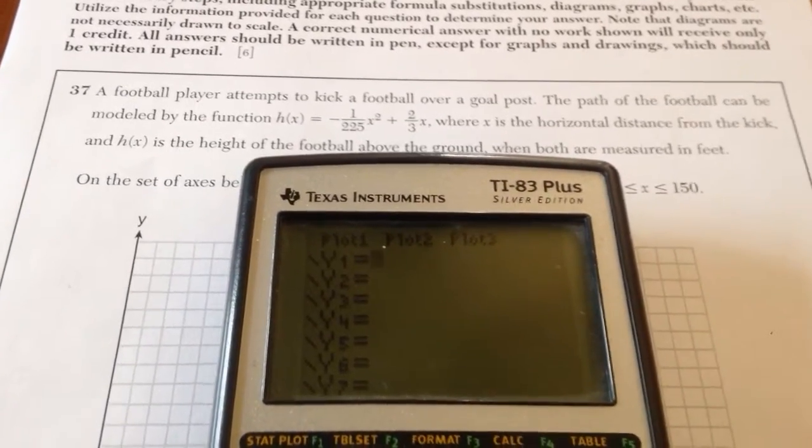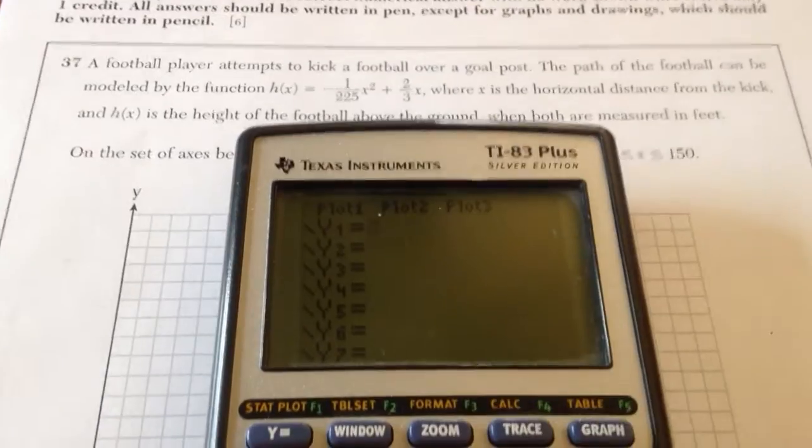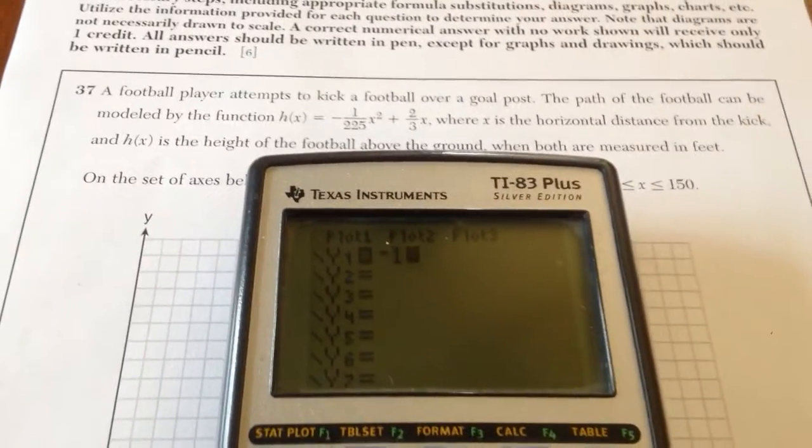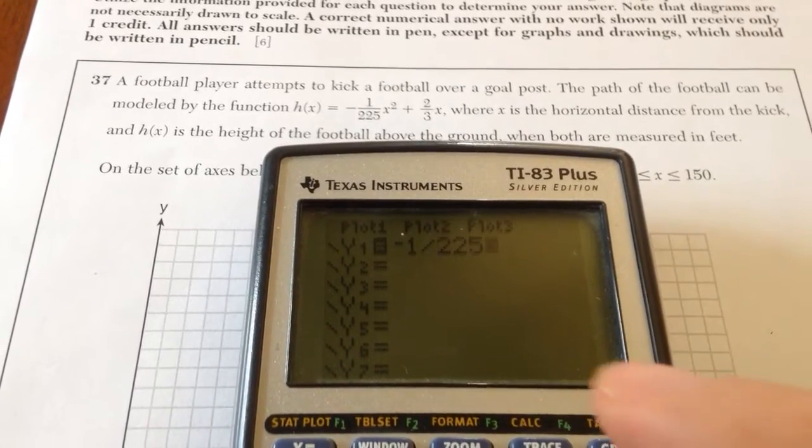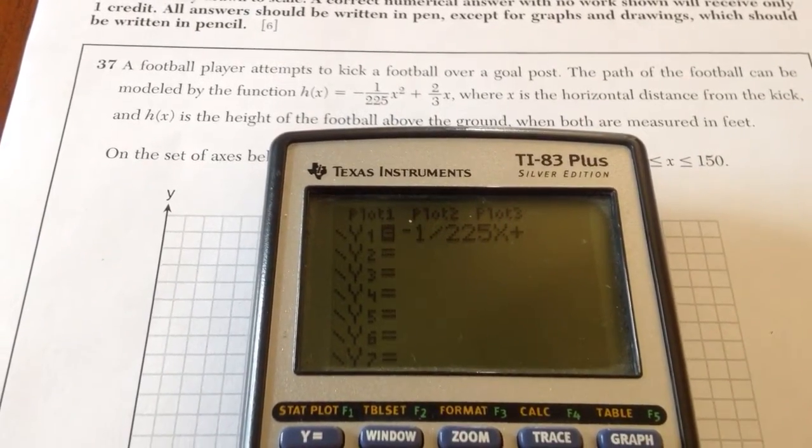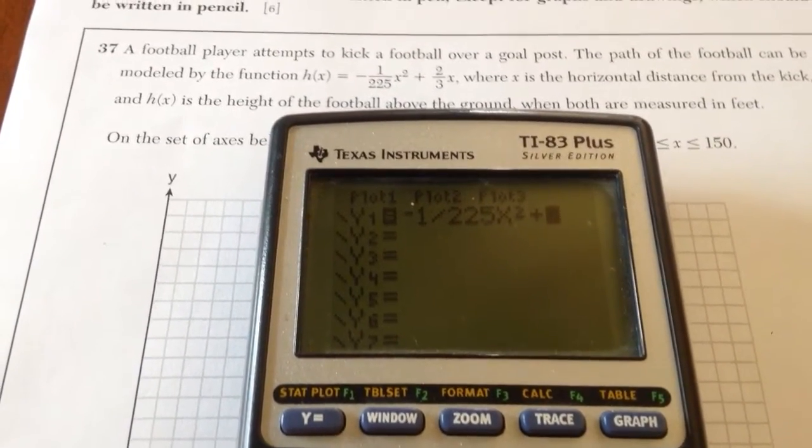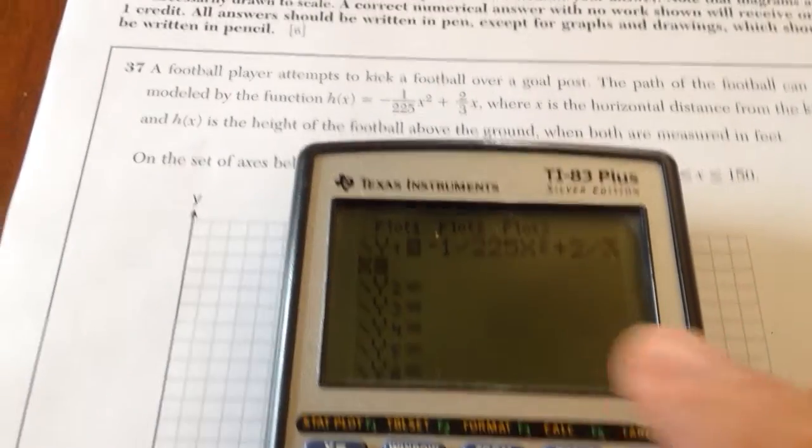Number 37 talks about a football kick. In order to get an idea of what this graph looks like, I'm going to do negative 1 over 225 x squared plus 2 thirds x.